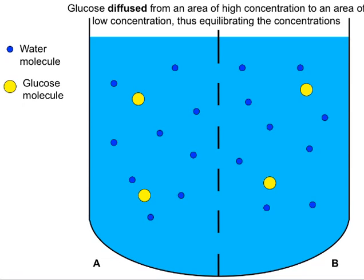Glucose diffused from an area of high concentration — when we first put it in site A — to an area of lower concentration in site B where there was no glucose, and now they have equilibrated. This applies not only to solids in solution; gases also diffuse. For example, this is how oxygen diffuses from high concentration in the air into your blood, which has a lower concentration of oxygen.